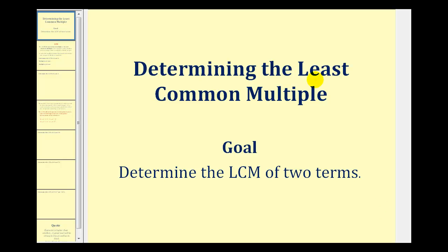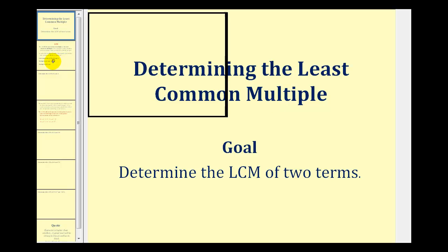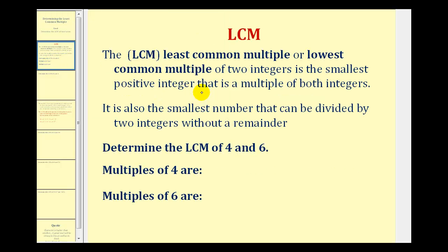Welcome to a lesson on determining the least common multiple. In this video, we'll take a look at two methods for finding the least common multiple of two numbers. The least common multiple, or lowest common multiple, of two integers is the smallest positive integer that is the multiple of both integers. It's also the smallest number that can be divided by both integers without a remainder.